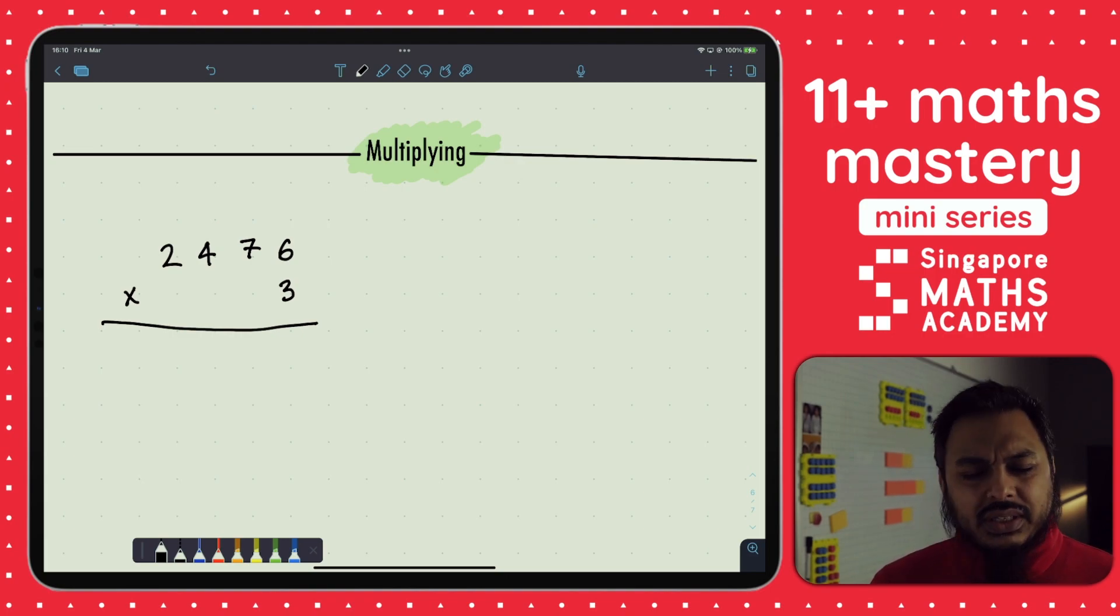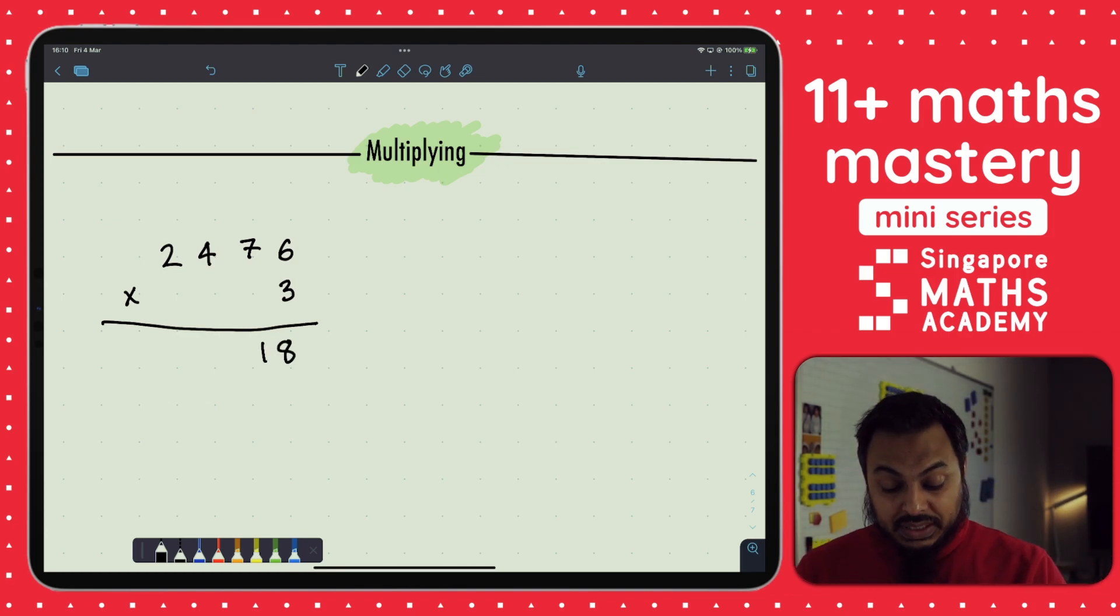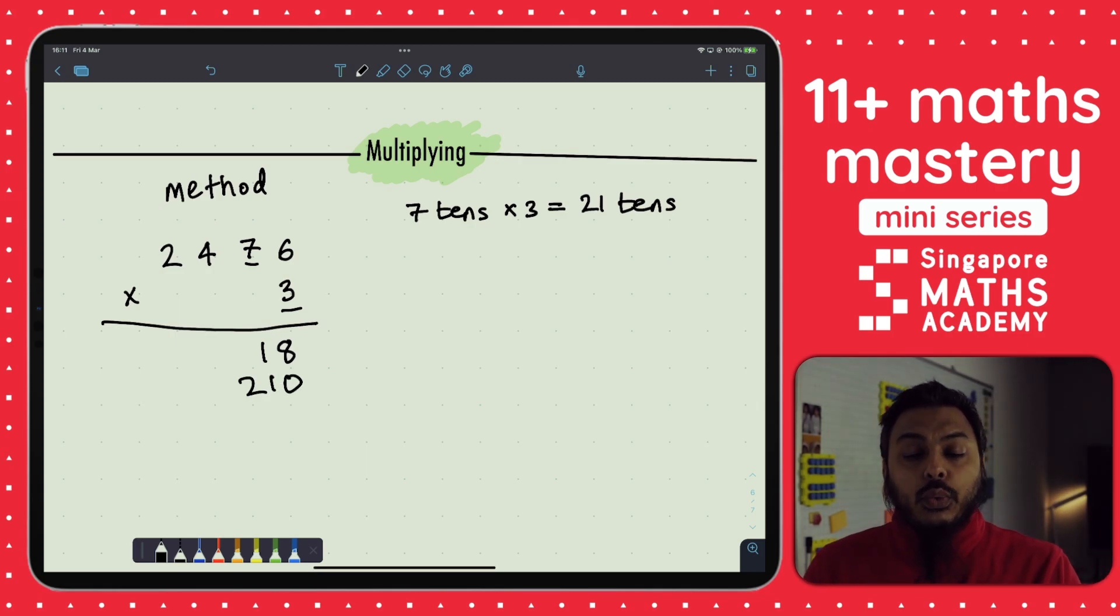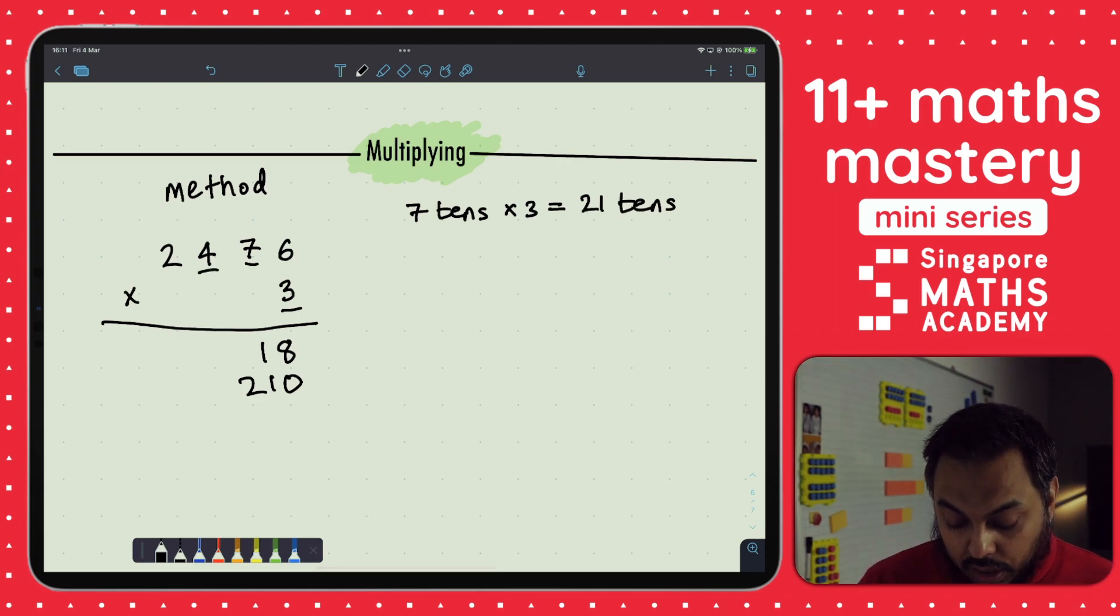So what do we do here in this broken down method? This is three times six. What's three times six? Six, twelve, 18. So I'm going to write three times six is 18. I'm going to write down 18. So this is method one. I'm going to write down for each place value, if I multiplied that by three, what would I get? Now I've got seven tens here. So I'm going to write this down. Seven tens times three is going to be 21 tens. 21 tens is written as 210.